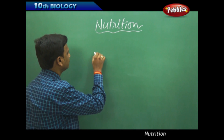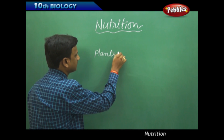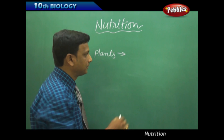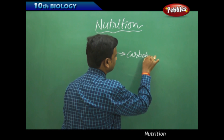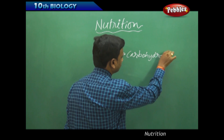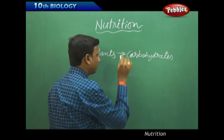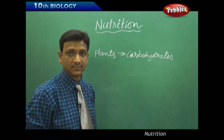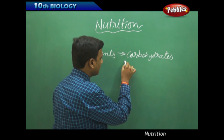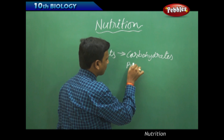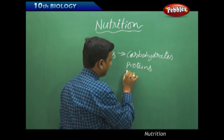In autotrophic mode of nutrition, plants produce molecules like carbohydrates. Do they produce only carbohydrates? No. Along with carbohydrates, they also produce certain substances called proteins and lipids.